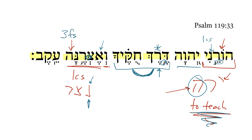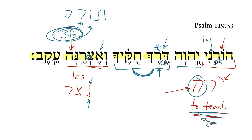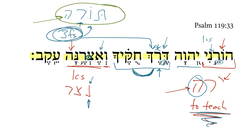And then notice this suffix — it is a third feminine singular suffix. I think what we're referring to here is actually the Torah. Notice Torah is also third feminine singular. Derek, or 'way,' is not a feminine noun, so there's something here that the psalmist is referring to. Teach me the way of your statutes, and I will keep it — meaning I will keep your instructions, the Torah.